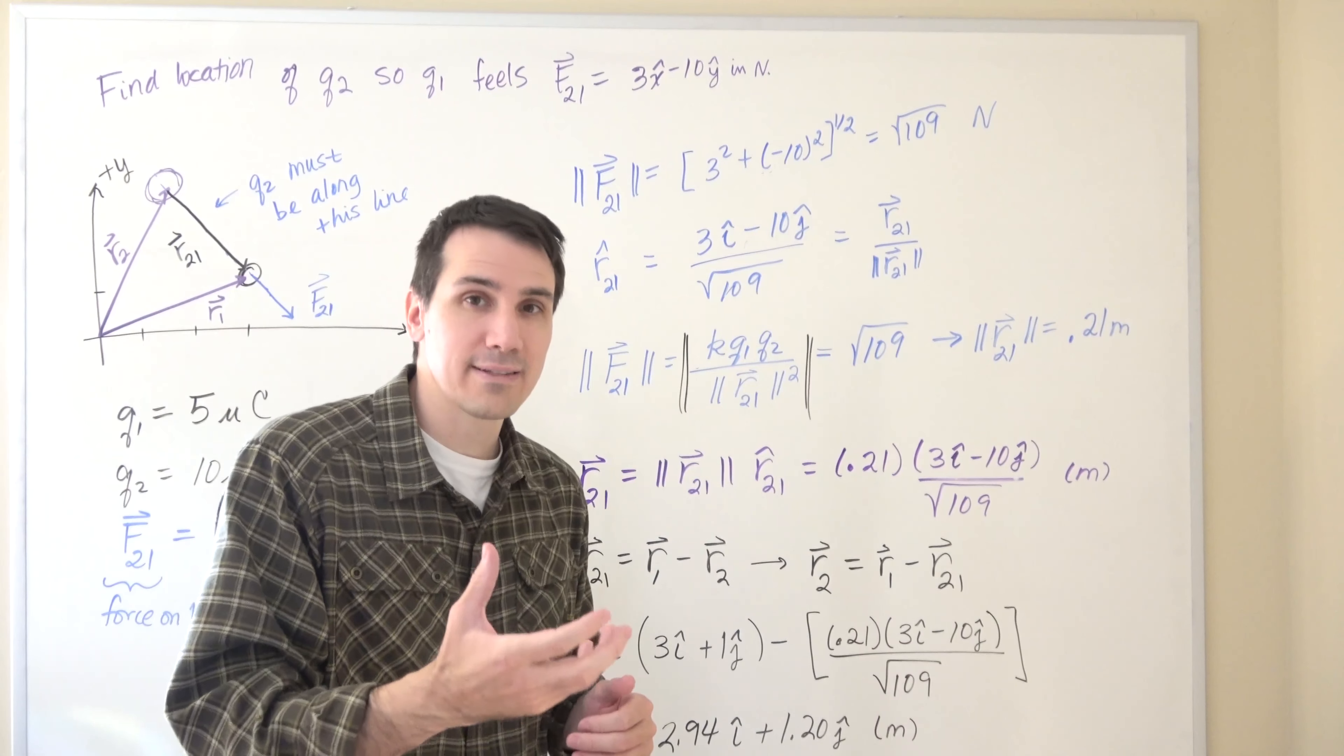Then we found the r-hat vector, and then the r21 vector. So we found r21-hat using the direction of the force because we knew that r21-hat needed to point in the same direction as the force.